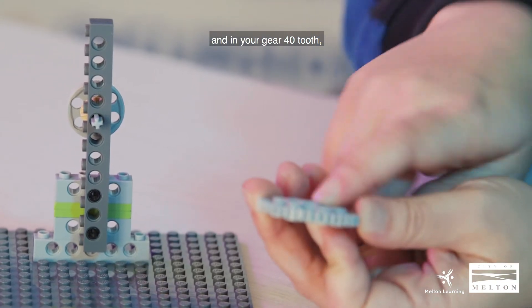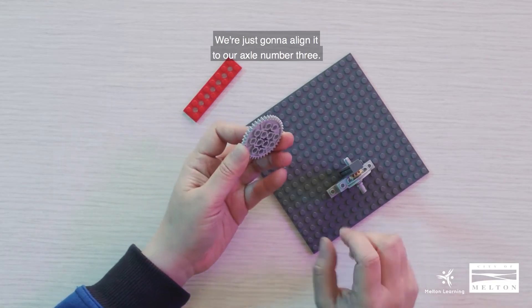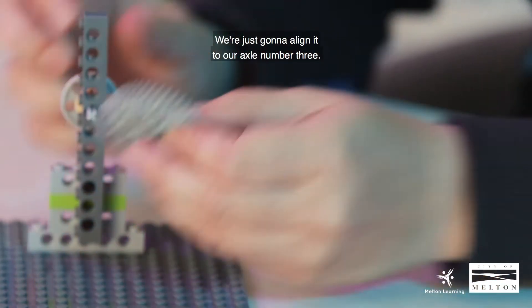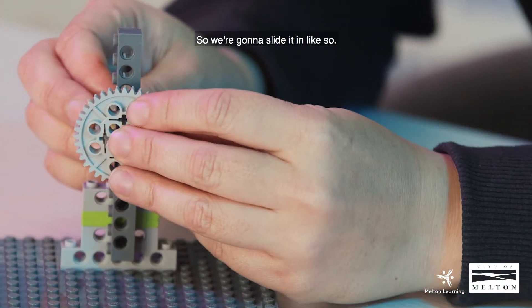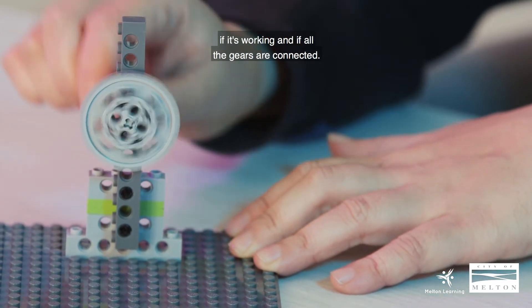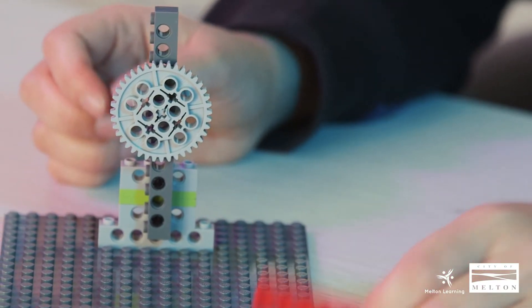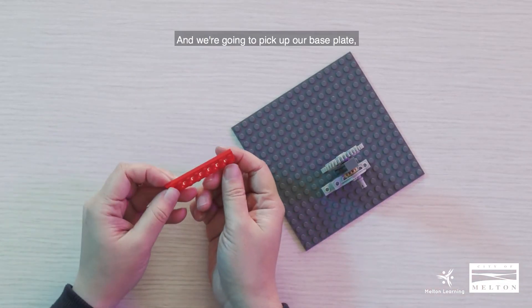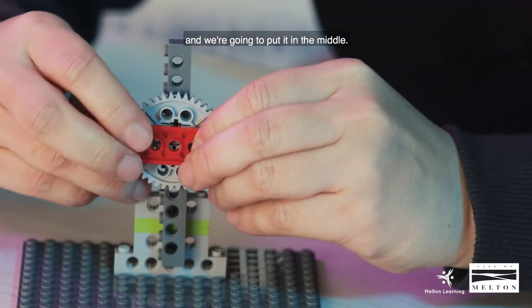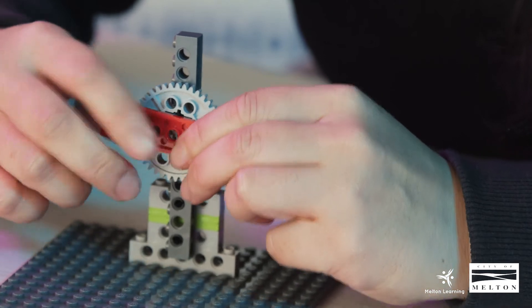And in your gear forty tooth, you could actually see axle hole in the middle. We're just going to align it to our axle number three. We're going to slide it in. You can test it again manually if it's moving, if it's working, and if all the gears are connected.